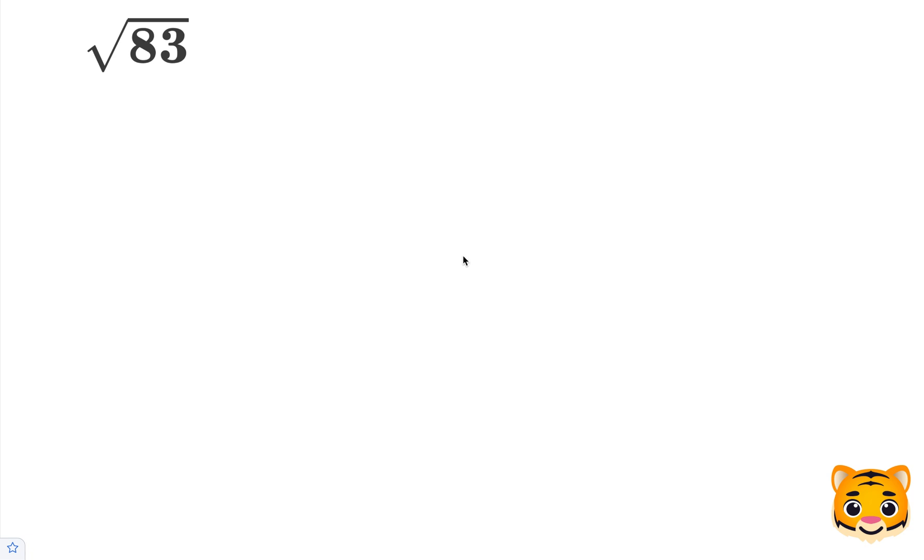In this example, we will be evaluating the square root of 83 by rounding it to the nearest tenths place value. To do this, we want to look at perfect squares nearby to 83. An example of this is 9 squared, which is 81. We can also look at 10 squared, which is 100.